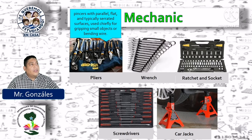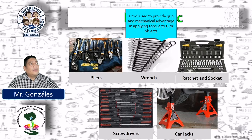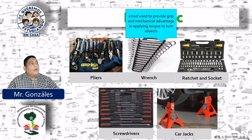Wrench: a tool used to provide grip and mechanical advantage in applying torque to turn objects. Una herramienta utilizada para proveer agarre y con la ventaja mecánica de aplicar fuerza de torque para hacer girar objetos.